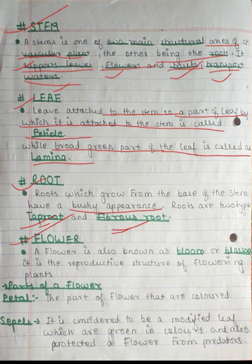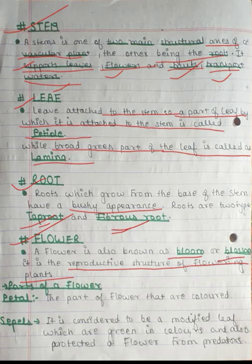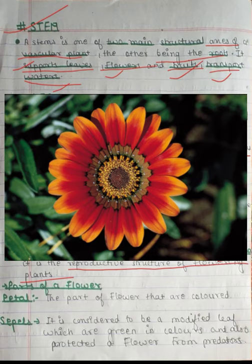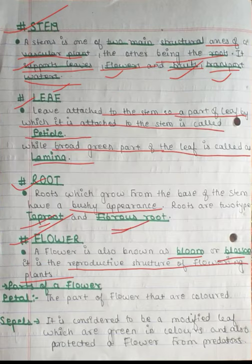Flower — our flower is also known as a bloom or blossom. It is a reproductive structure of flowering plants. Examples of flowers include the rose, hibiscus, and lily. These are all flowers and they are the reproductive structures of flowering plants.